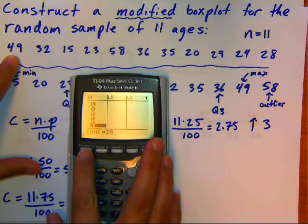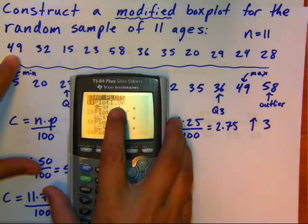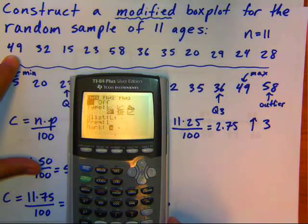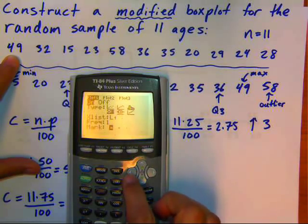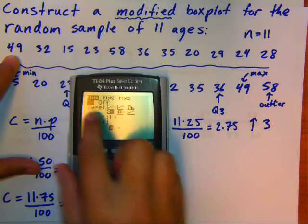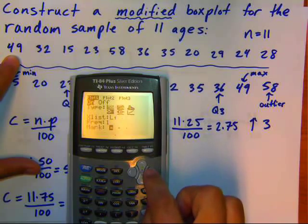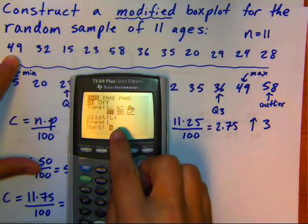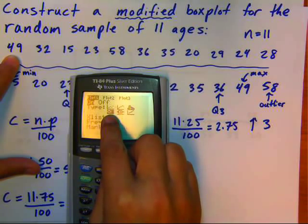Once you're done with that, you're going to go to stat plot, which is up here in blue. So I'm going to hit second, Y equals. Yours might say off right now. It doesn't matter. But you just want the very first plot in there. So I'm going to hit enter. You're going to want to take your cursor by using your left and right arrow keys. Highlight the on. Do the down arrow. And under type, move over until you get the little box plot with two dots next to it. That's the modified box plot. The one without the dots won't check for outliers. So you want this one that's right there. While it's blinking on there, hit enter, so it'll highlight it.